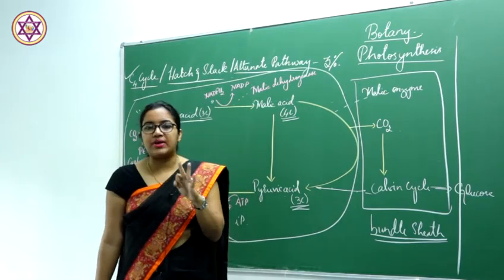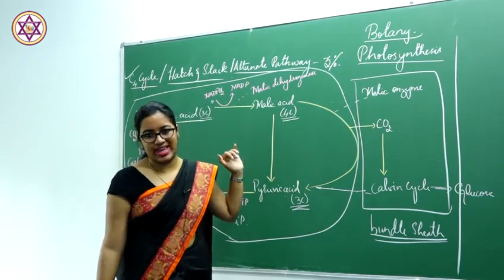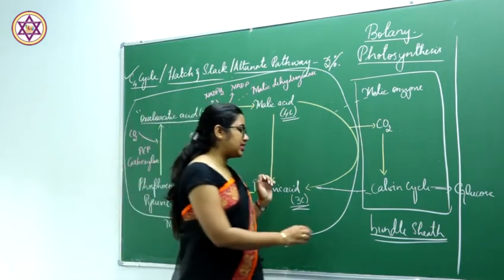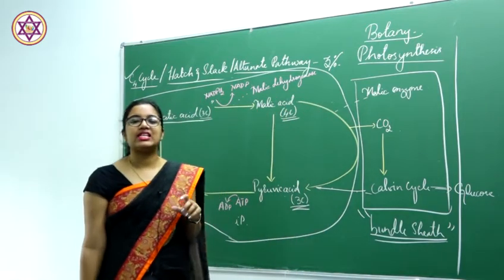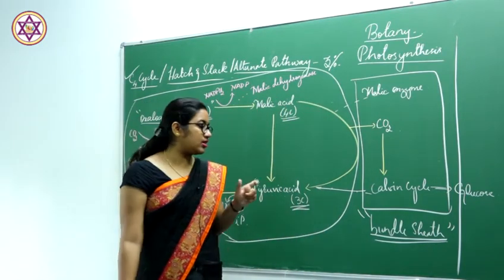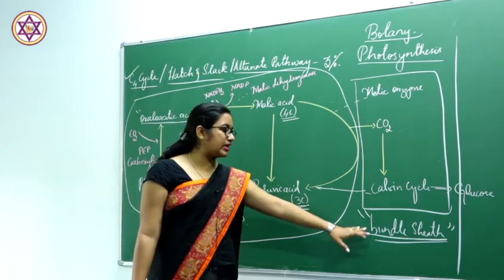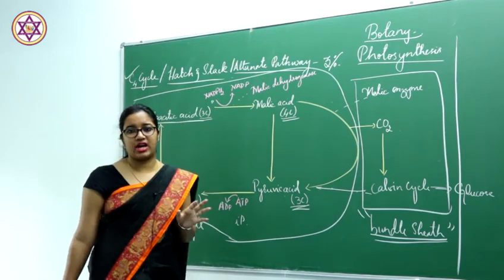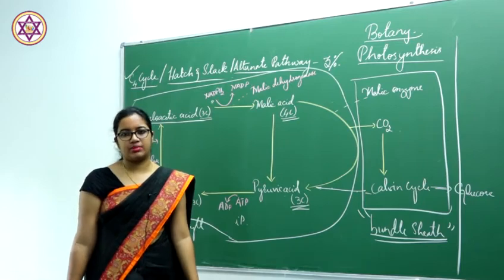Only 3% of plants use this mechanism of fixing carbon dioxide. Why? Because there is a change in the bundle sheath cells — the chloroplast does not have grana in them. That is the reason they enter into this special type of fixation of carbon dioxide, known as Kranz anatomy.